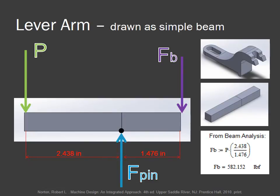When the lever arm was analyzed, it was assumed that there was no deflection in the arm. This allows us to use simple beam analysis. We took the moment at F pin to find the force applied to the bell FB. FB is equal to 582.152 pounds force.